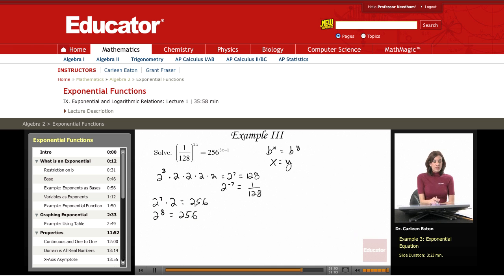Now I can write this equation using the base of 2. On the left, I'm going to have 2 to the negative 7th raised to the 2x power equals, and then on the right, 2 to the 8th times 3x minus 1.